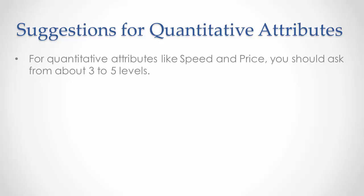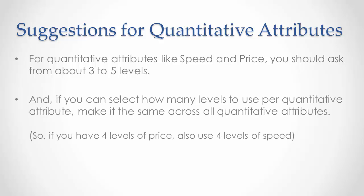Regarding quantitative attributes like speed and price, you should ask from about three to five levels. And if you can select how many levels to use per quantitative attribute, make it the same across all quantitative attributes if you can. So if you have four levels of price, you should also use four levels of speed.